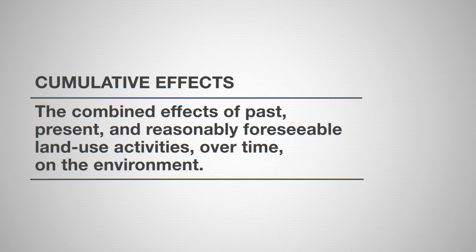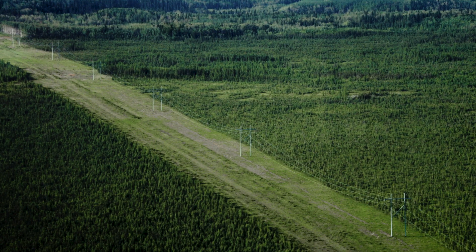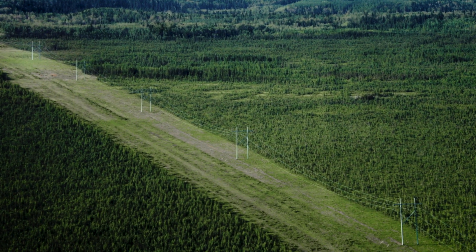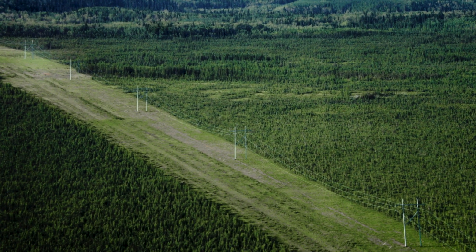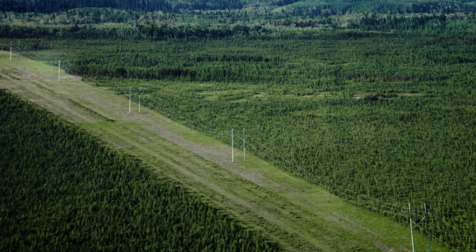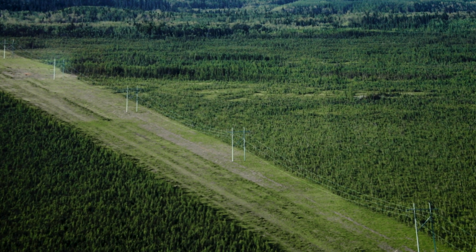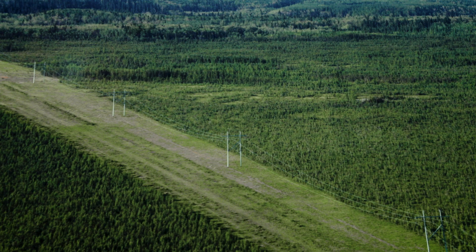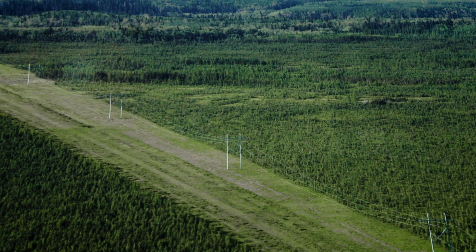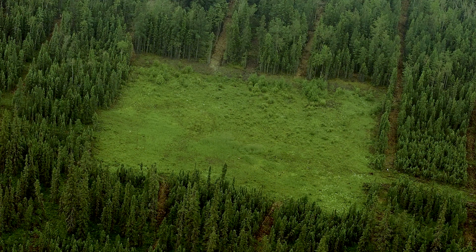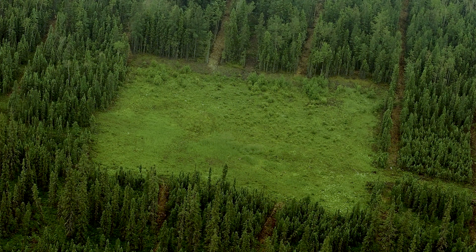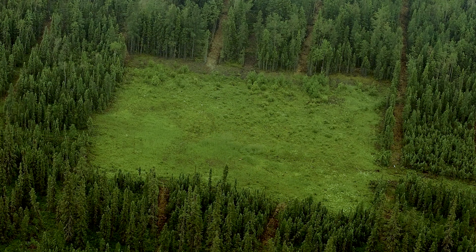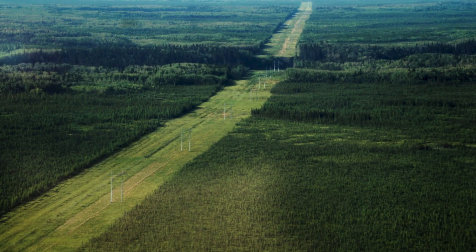For example, take linear disturbances. Linear disturbances are things like access roads, transmission lines, or any line feature on the land resulting from a human activity. When these combine and interact with one another, and with other disturbances, they can significantly change the landscape and ecosystem.